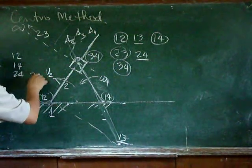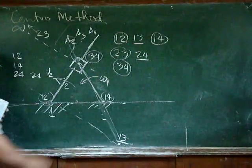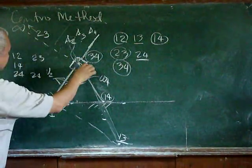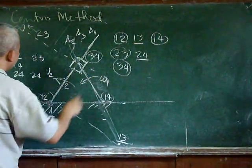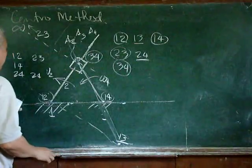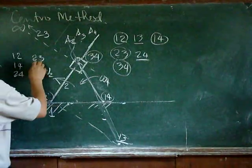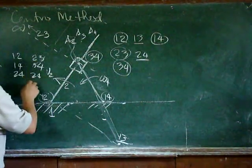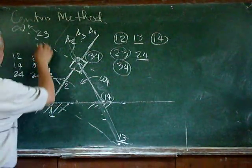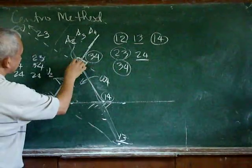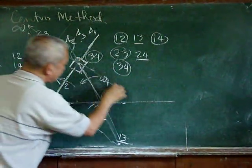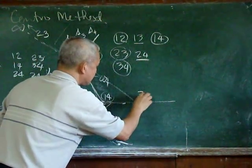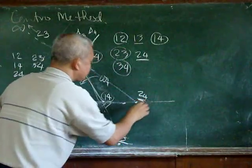Center 2-4 can also be determined from 2-3 and 3-4. There is an intersection, so 2-4 is located somewhere here.